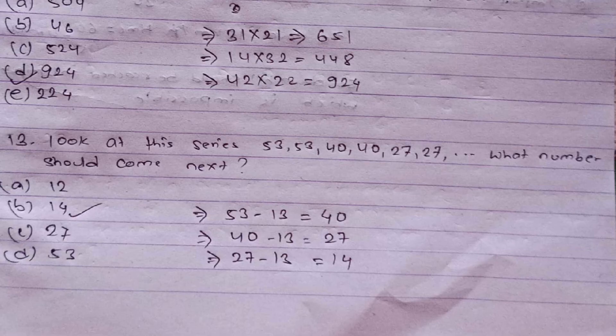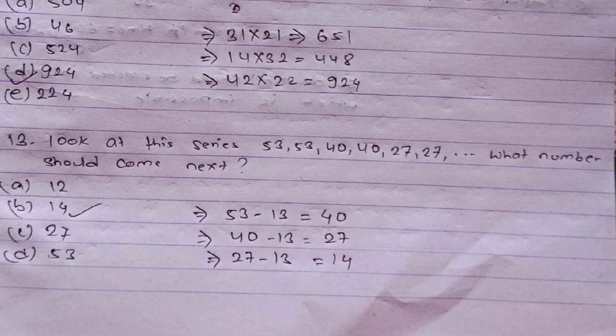Question thirteen is also logical — you need to find the pattern in the sequence: 53, 53, 40, 40, 27, 27. Each number decreases by 13 from the previous distinct value: 53 − 13 = 40, 40 − 13 = 27, 27 − 13 = 14. The next value in the sequence is 14. The correct answer is option B.